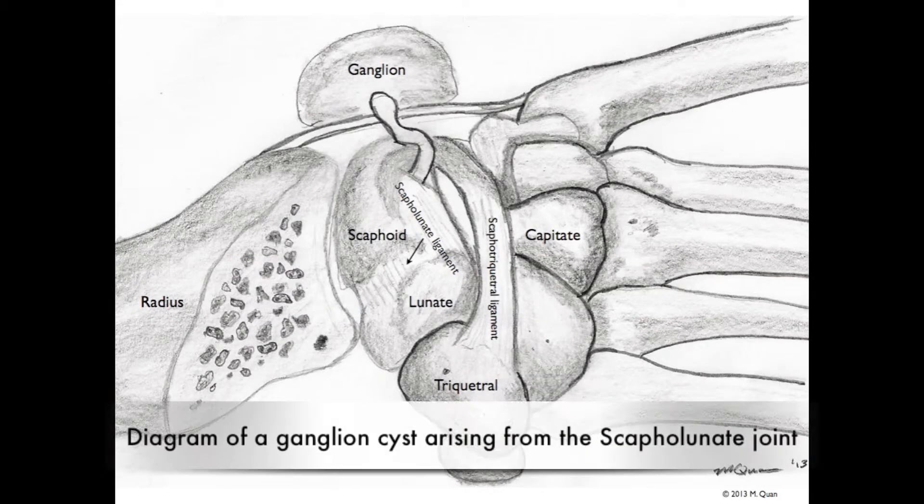This is a diagram showing a large ganglion cyst arising from the scapholunate joint in the dorsal wrist.